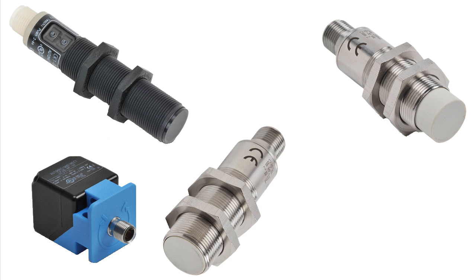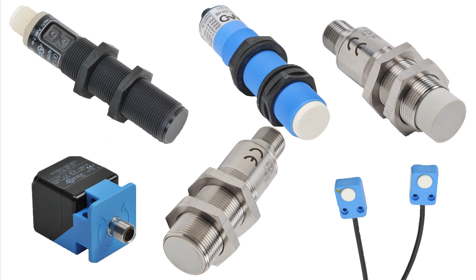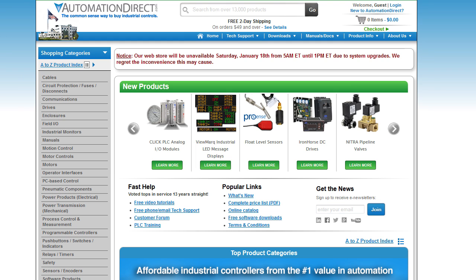With all the different form factors, output types, cabling options, etc., choosing a proximity sensor can be a little overwhelming. The good news is the AutomationDirect website has a fantastic parametric search that will help you find the sensor you need quickly.